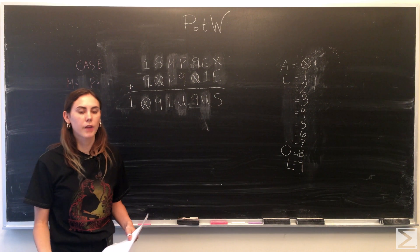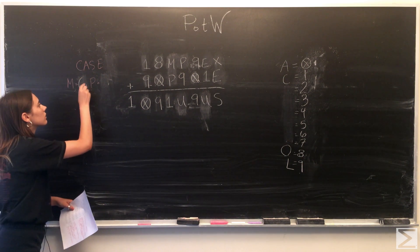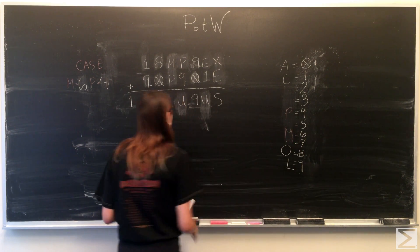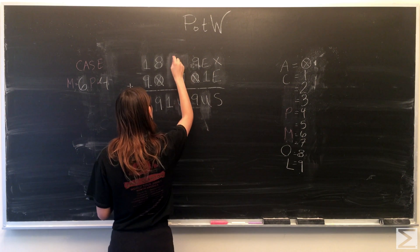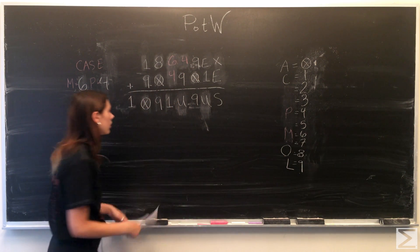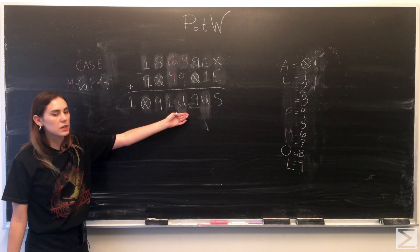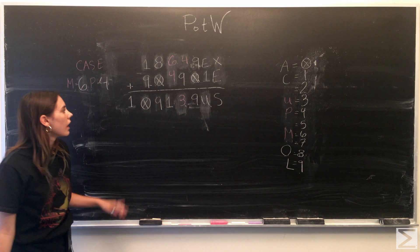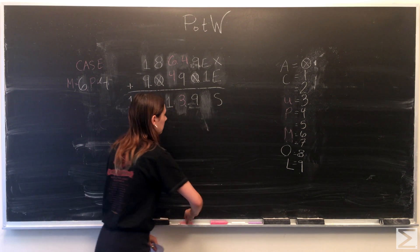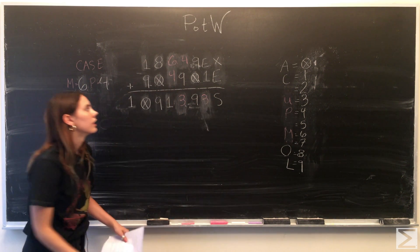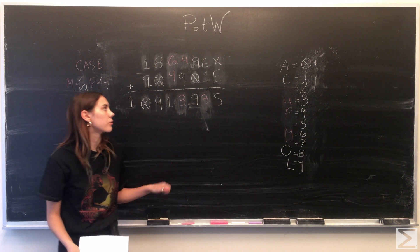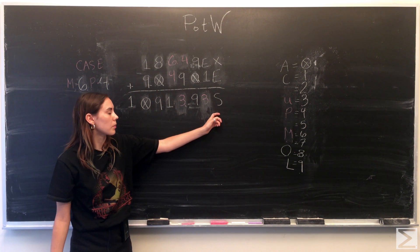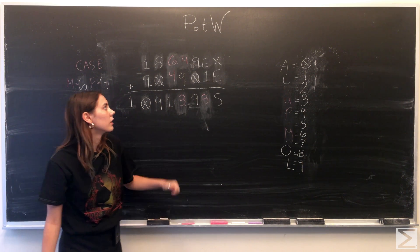Now we move on to the last and final case where M is equal to 6 and P is equal to 4. Now looking at the equation, you'll notice that U has to be equal to 3. 4 plus 9 is equal to 13. And now looking at the equation, E plus 1 is equal to 3, you'll notice that we have a couple options for what E could be. E could either be 1 in the case that a 1 is carried over from the first column, but we know that E can't be 1 because C is equal to 1. So E then has to be 2.